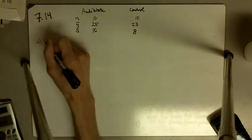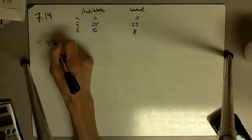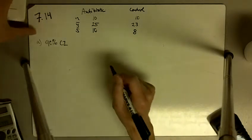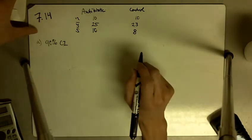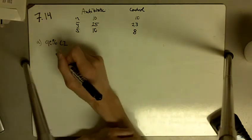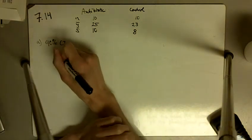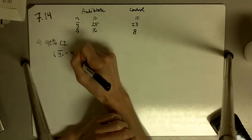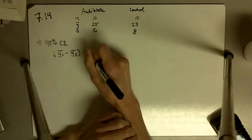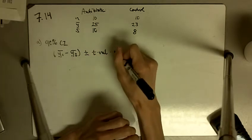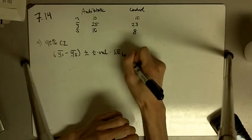Part A says: create a 90% confidence interval for the difference in population means. Assume that they're normally distributed. Our confidence interval is going to be centered around the difference in our sample averages, plus or minus some t-value multiplied by the standard error of the difference.